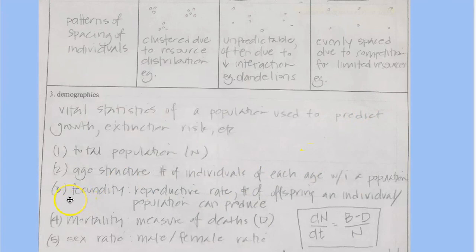And then another demographic is fecundity. And fecundity just means reproductive rights. So the number of offspring an individual can produce. For example, humans have a relatively low fecundity. We don't produce that many babies, but like frogs produce a lot of freaking babies. And so that they would have a high fecundity.